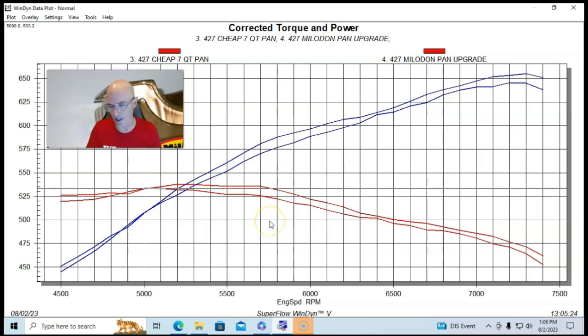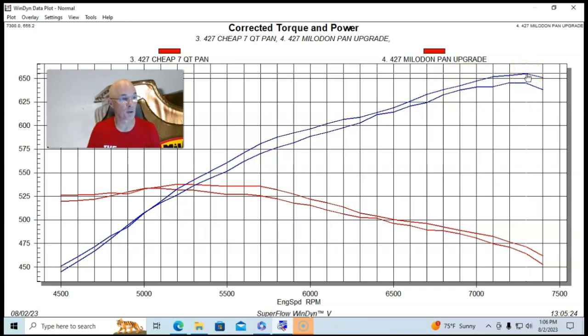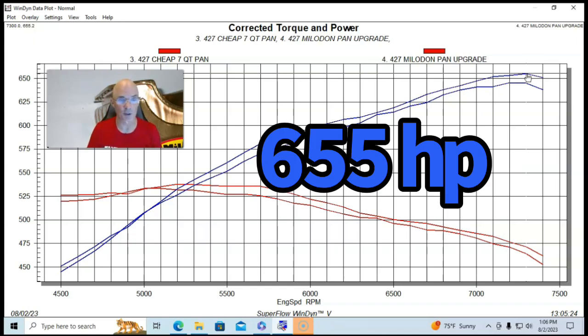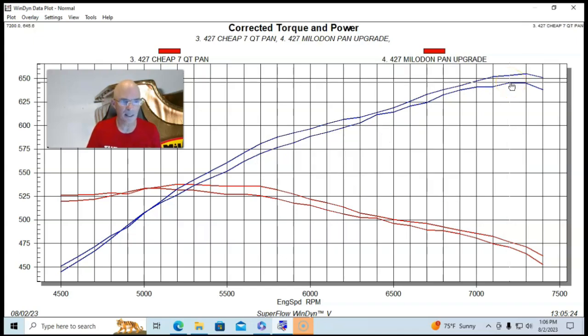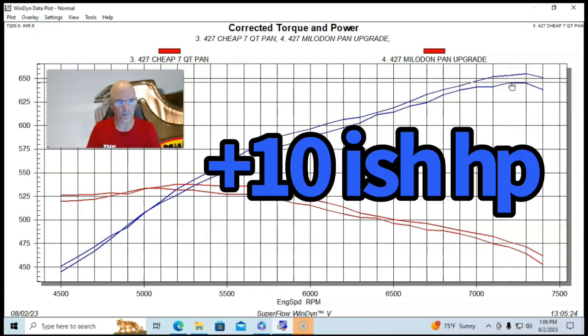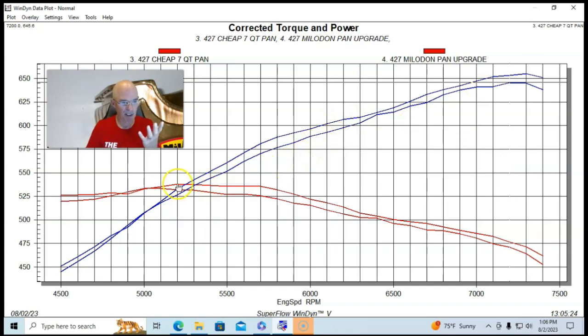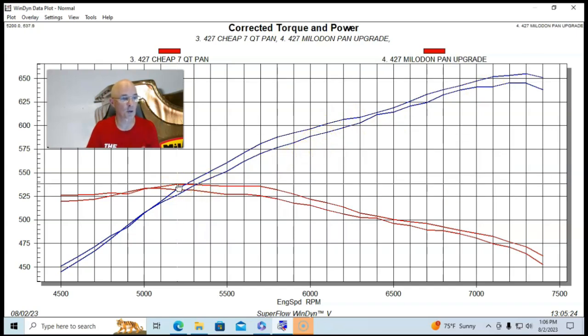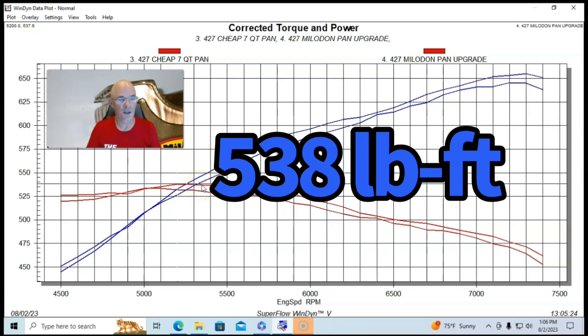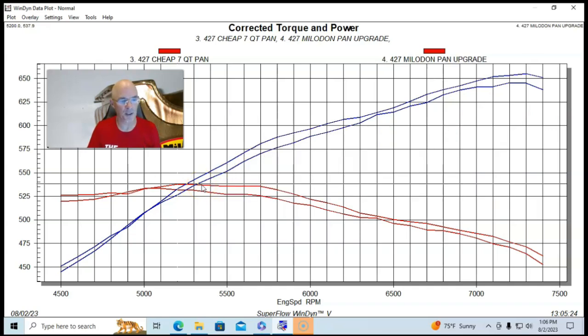And also, so the oil is not sloshing around, hitting the crank and stopping the thing from making power. So run with the Milodon pan, the combination produced 655 horsepower. So we picked up 10 or 11 horsepower. And peak torque was up just a little bit because most of this was happening past the torque peak, but 537 or 538 foot pounds of torque.